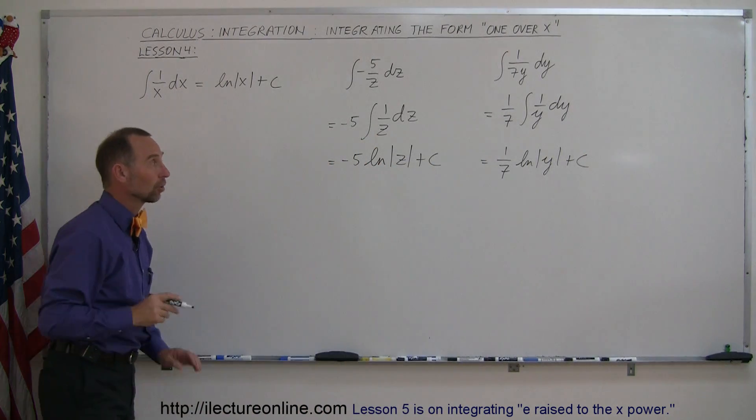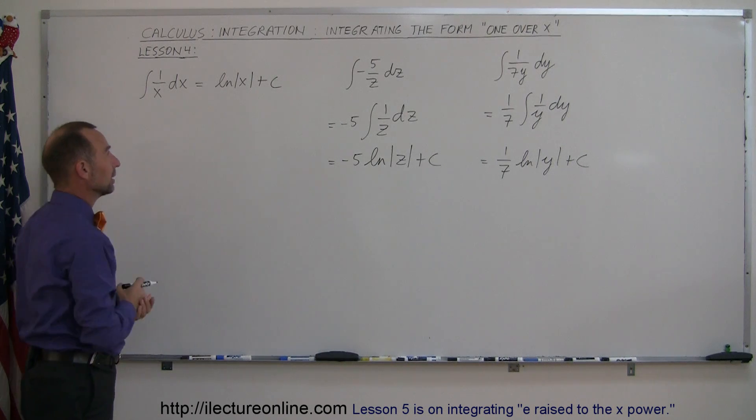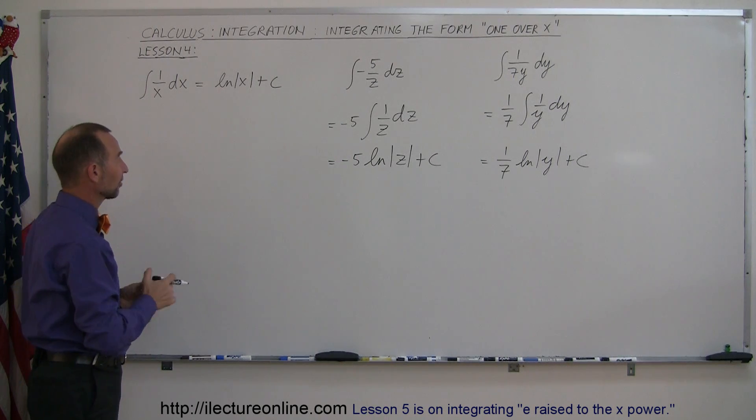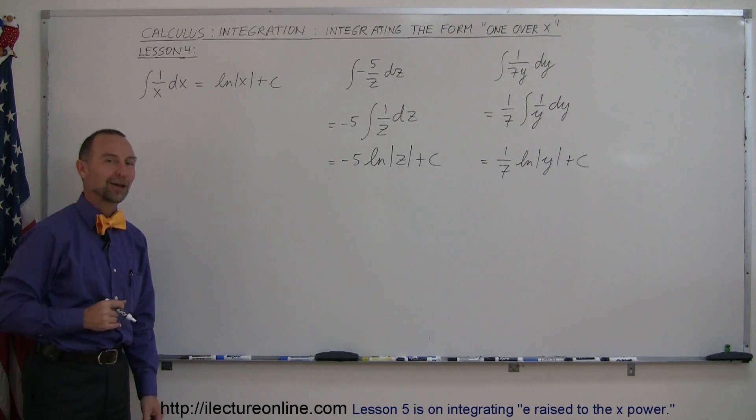So those are fairly straightforward. Just remember, you can't use the old power rule. You have to say that the integral of the form 1 over x dx is simply the natural log of x plus c. And don't forget the absolute value signs. And that's how you do that.